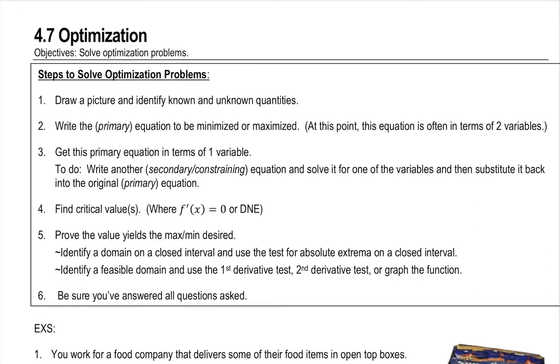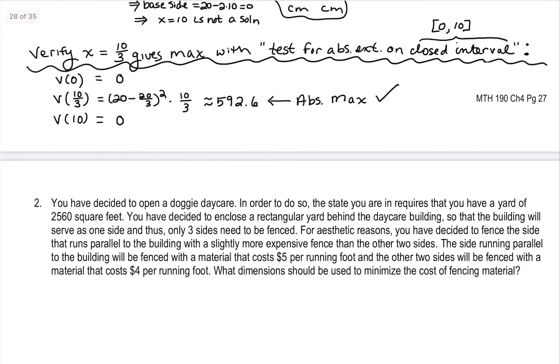So we're going to again start by drawing a picture, identify what we know, what we don't know. Then we're going to start by writing the equation that we are trying to either minimize or maximize. We might refer to this as our primary equation. When this is in terms of two variables, that means there will be additional information that we can write another. We could call this our secondary, or what I'll sometimes call the constraining equation.